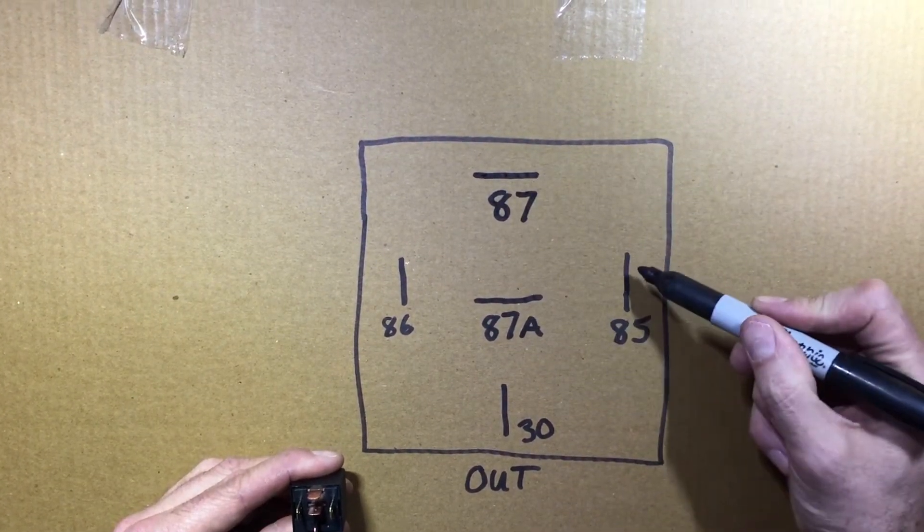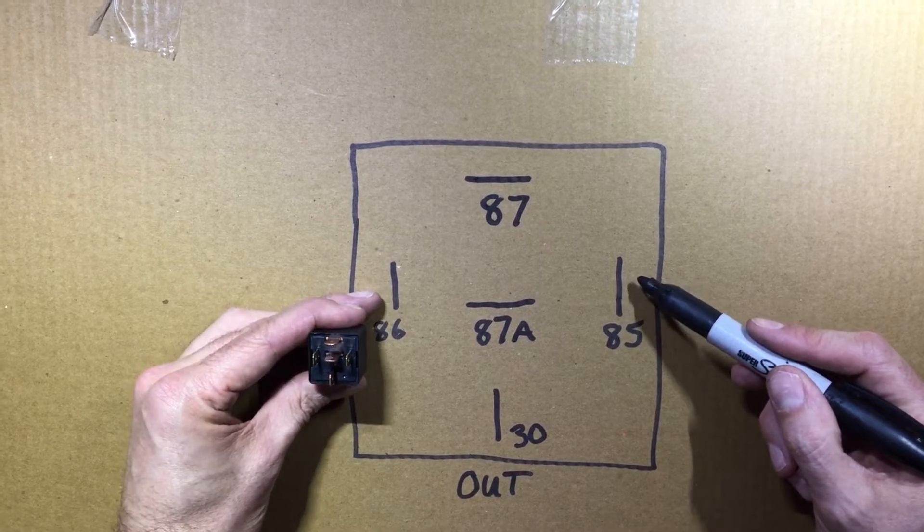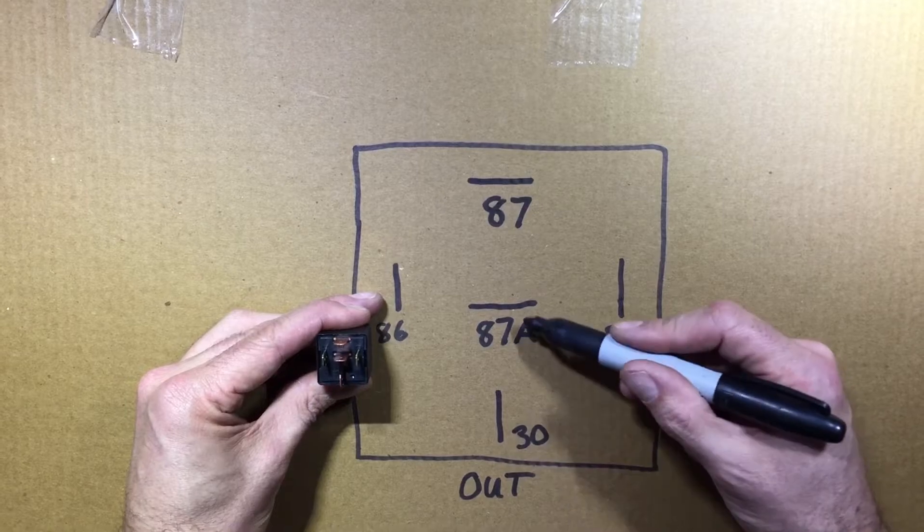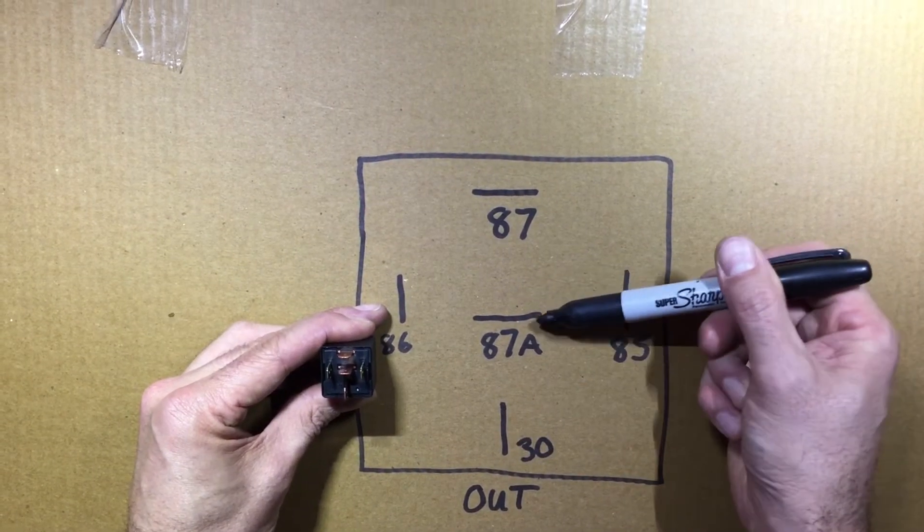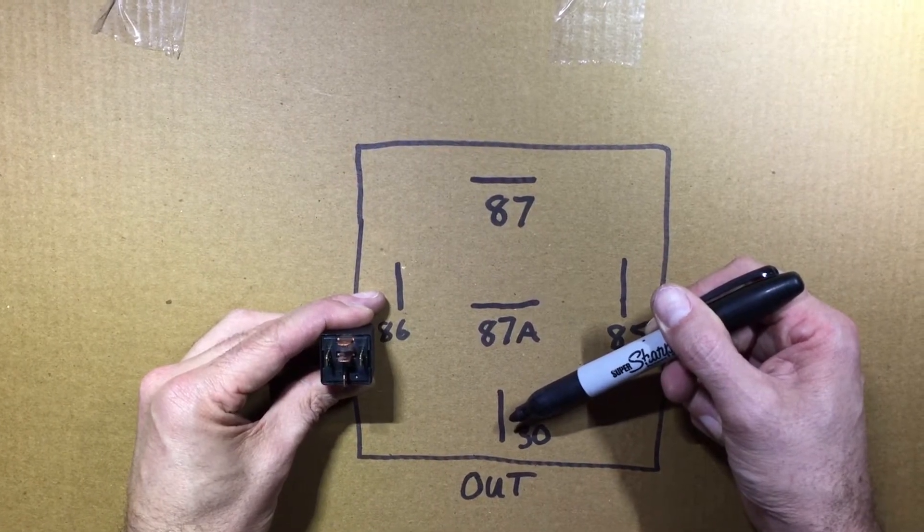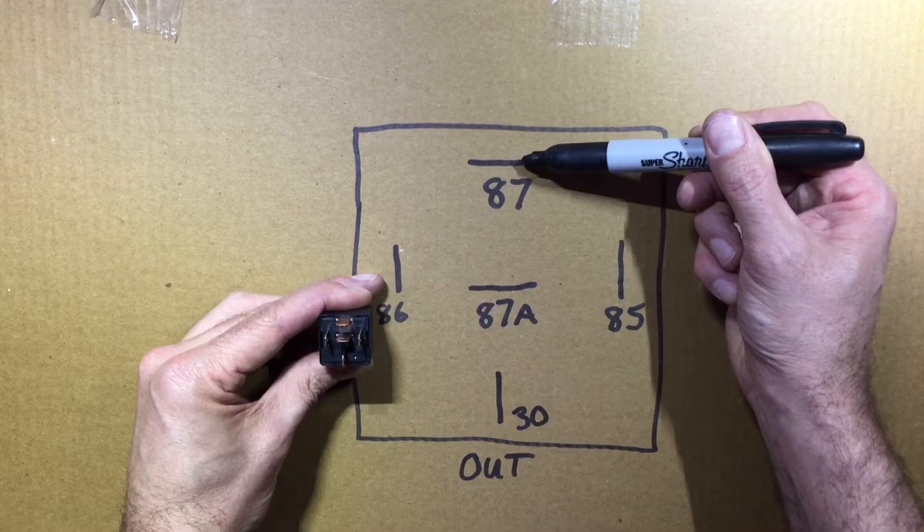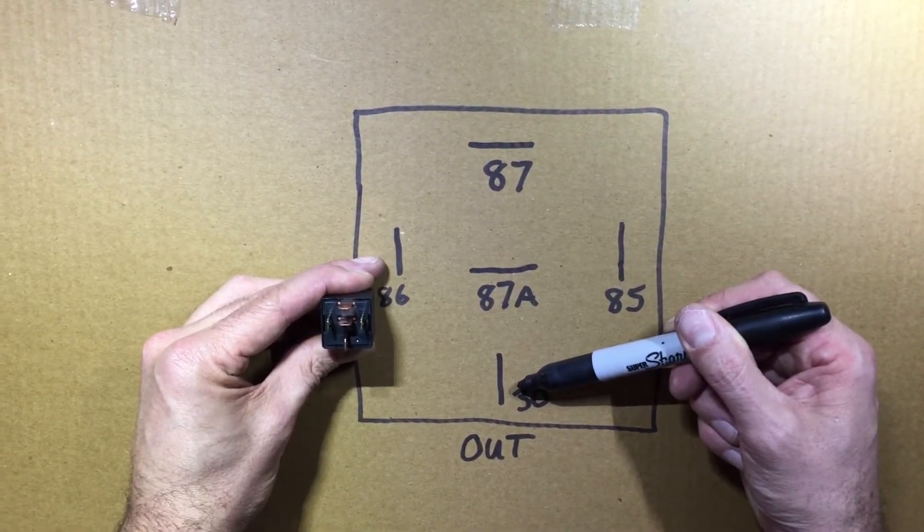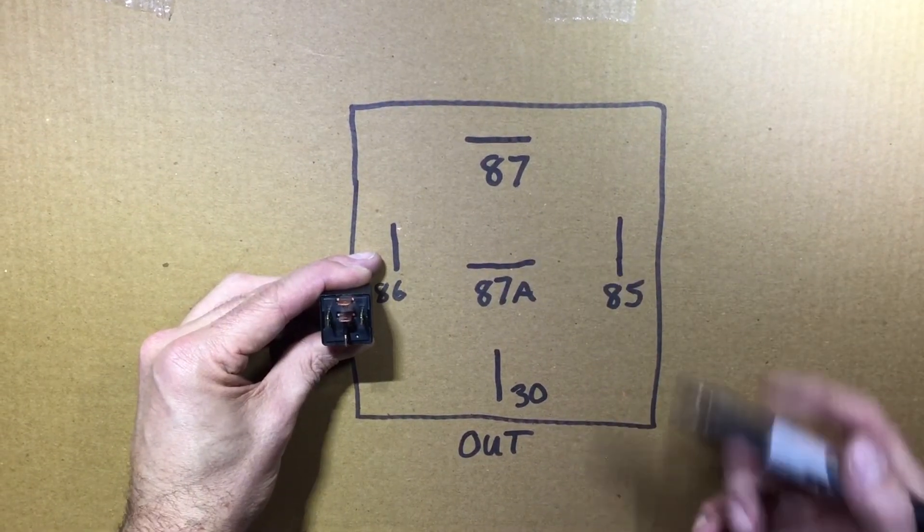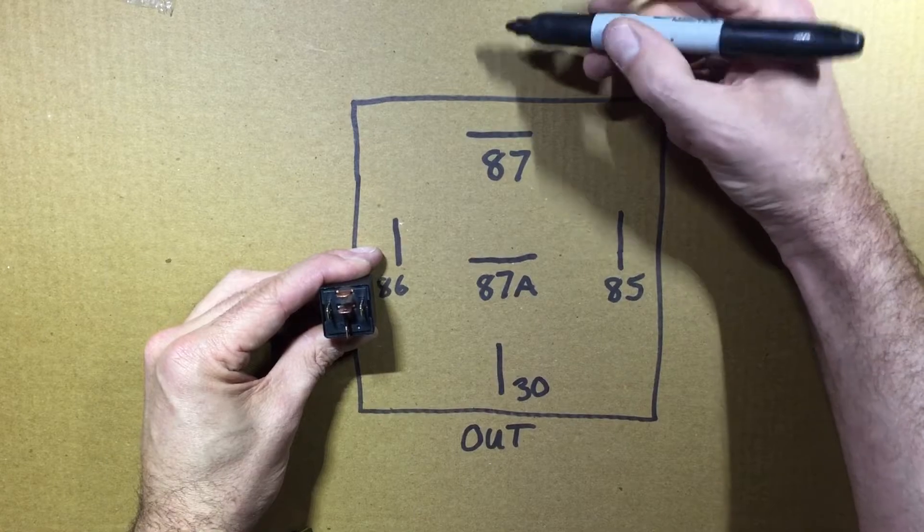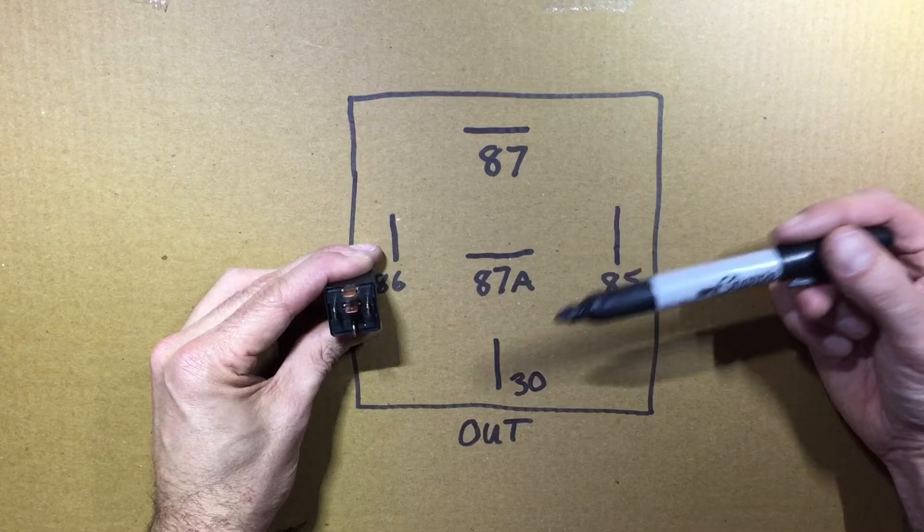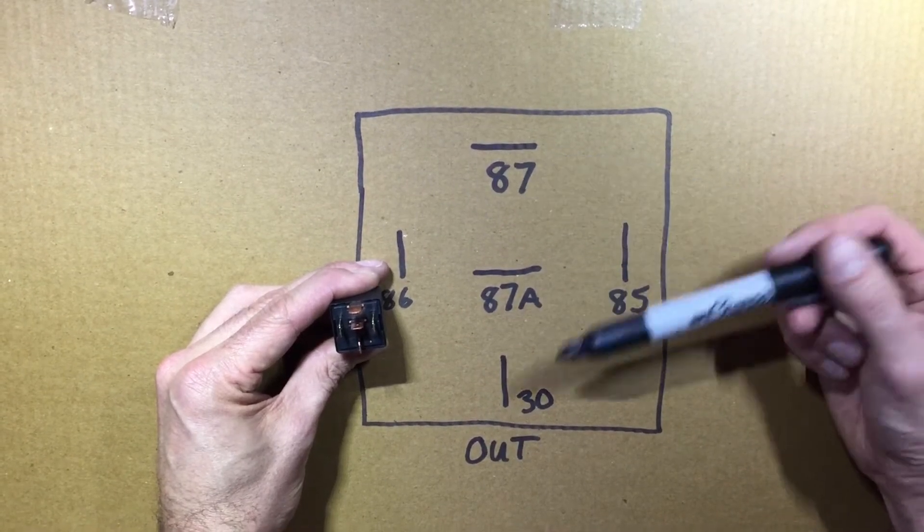Pin 30, which is on the bottom, this is your output. So this is out. In the middle we have 87A, and on the top we have 87. Now, non-energized, no power to this relay, these two, 87A and 30, will be connected. So if you put positive power in here, you have positive power coming out. As soon as you energize this, 87 and 30 become connected, 87A becomes dead. So you can use this, this is a 40 amp. I mean, you can get these 20, 30, 40 amp relays. This is a single pole double throw relay.